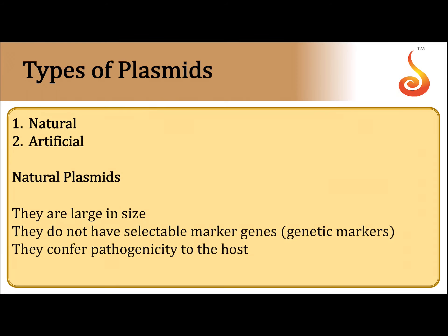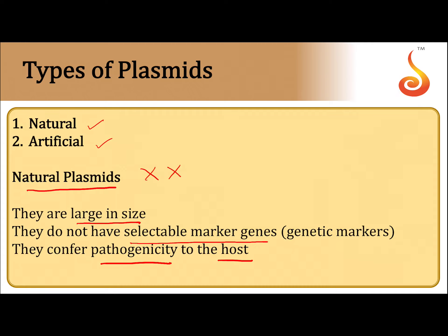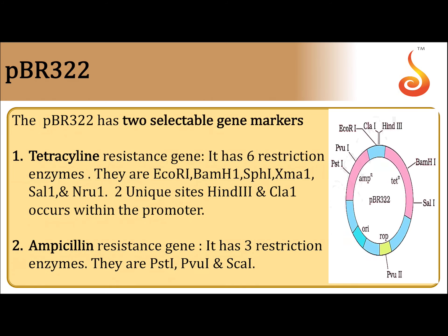Plasmids are classified into two types: natural and artificial. In the biotechnological field, natural plasmids were rejected because they are large in size, selectable marker genes are absent, and they create disease in the host organism. Because of these reasons, the artificial cloning vector pBR322 was selected.